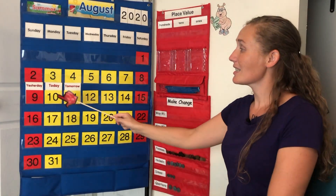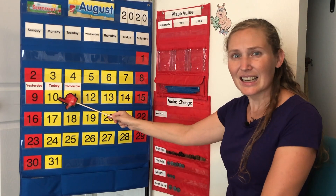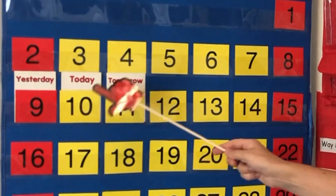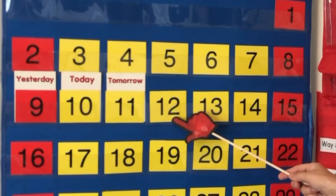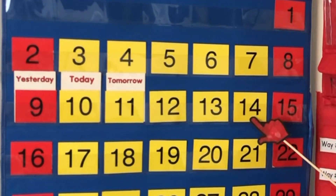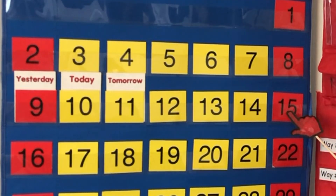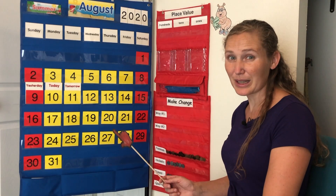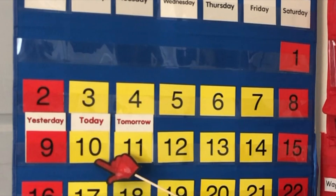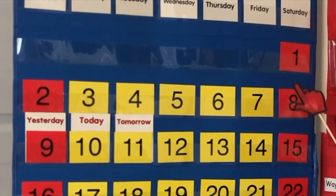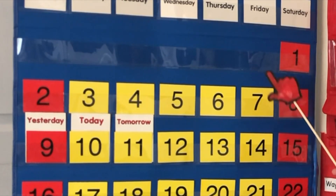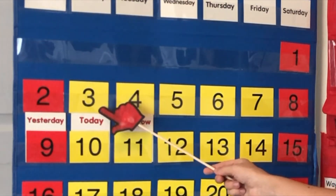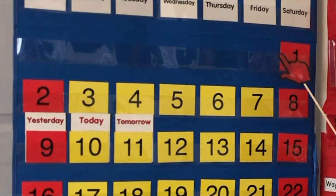Today's number is the number 10. Can you count up from 10 with me? 10, 11, 12, 13, 14, 15. Now, can you count down from 10 with me? 10, 9, 8, 7, 6, 5, 4, 3, 2, 1. Great job!